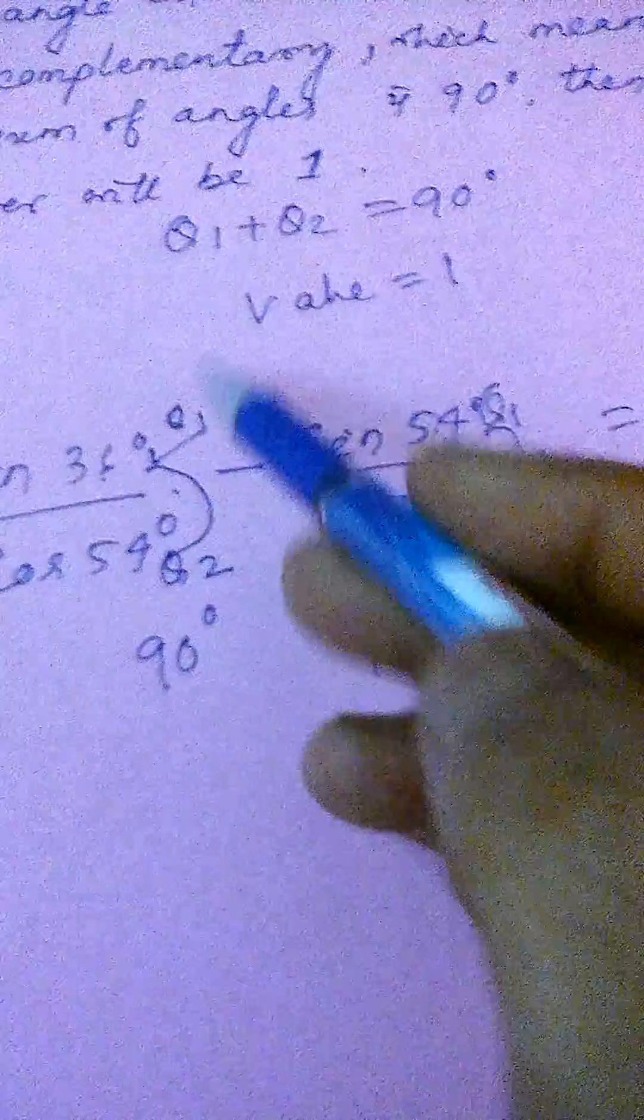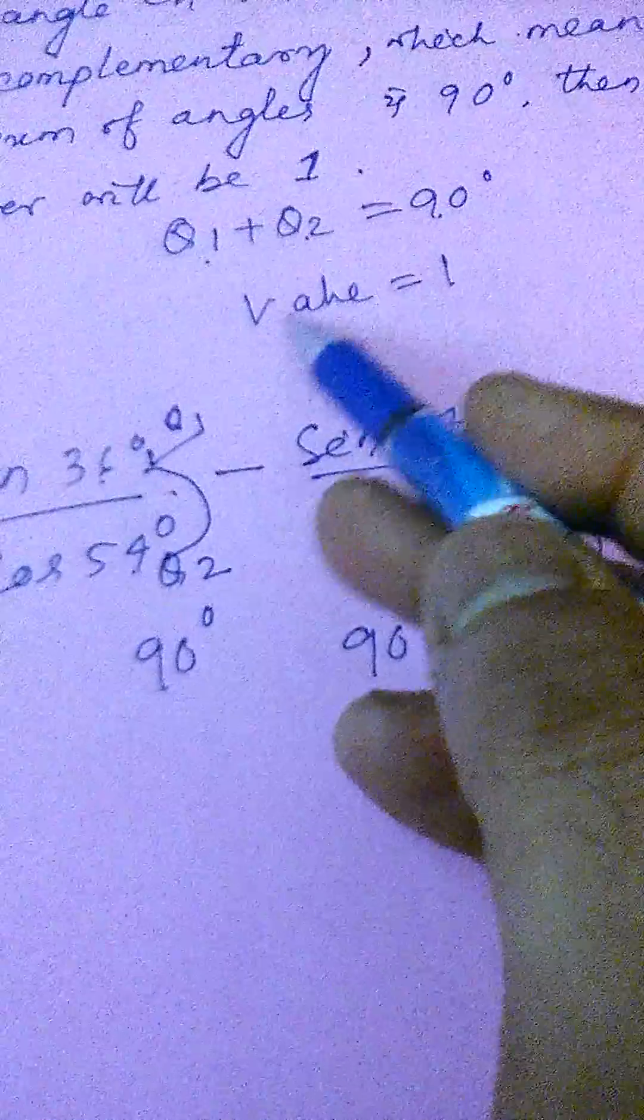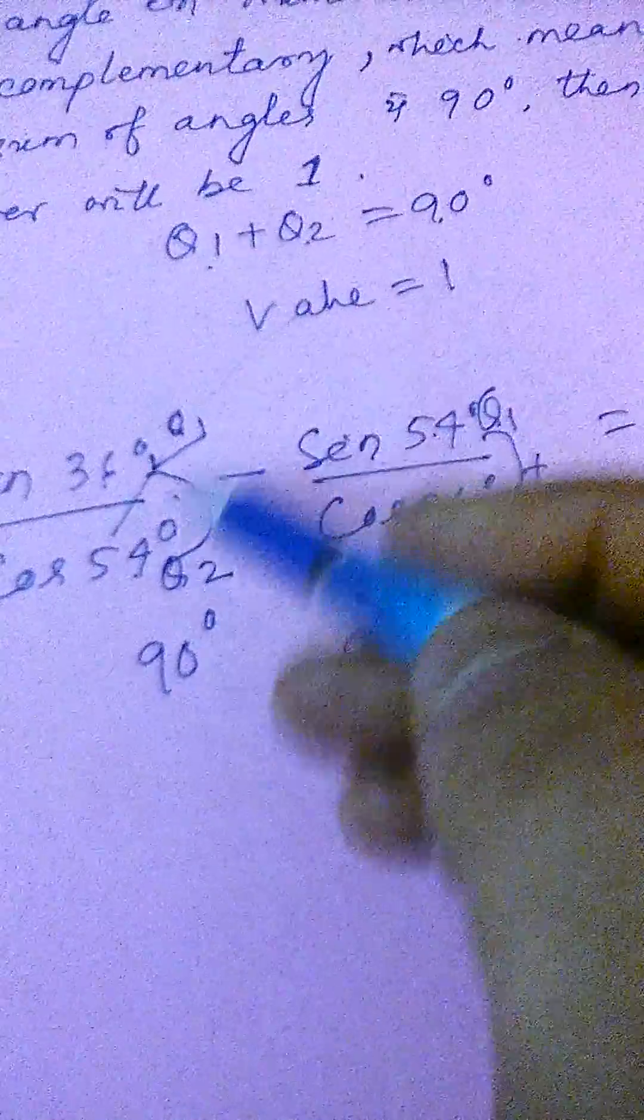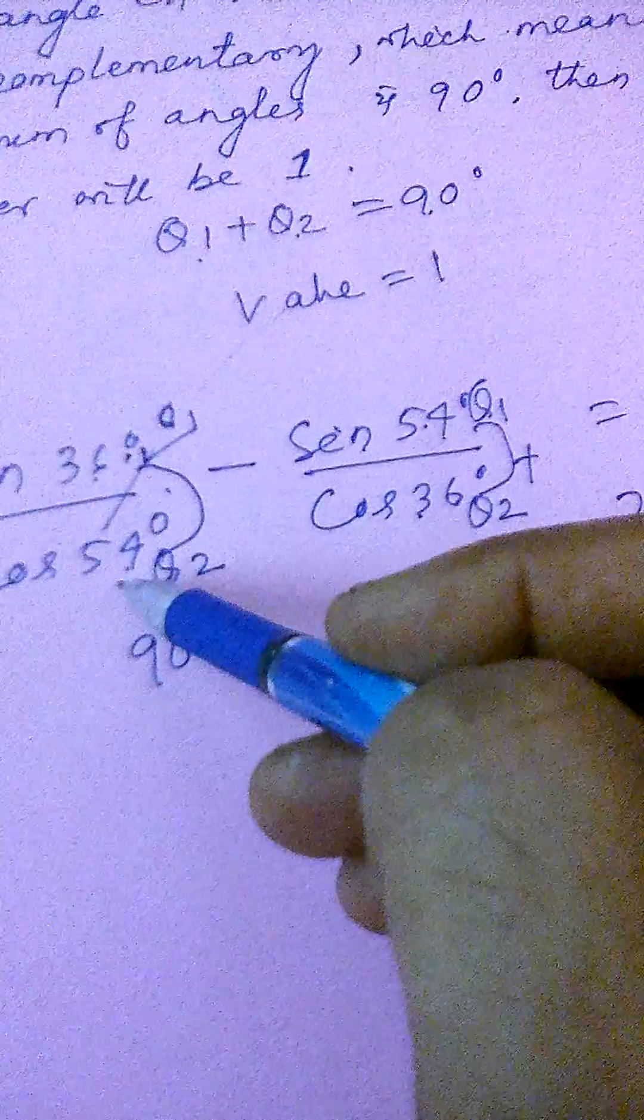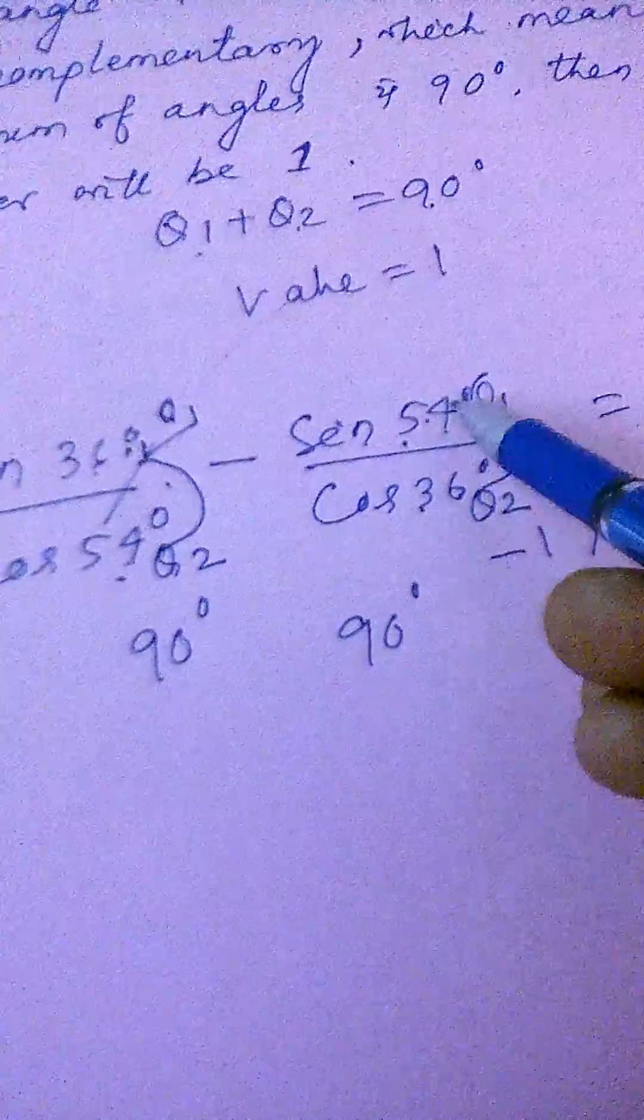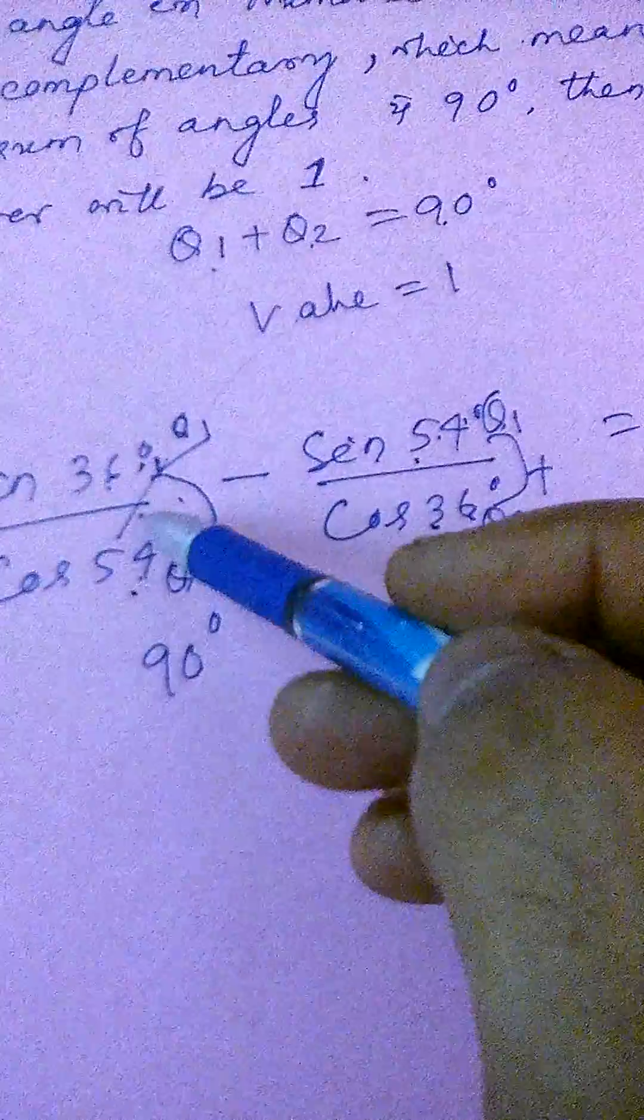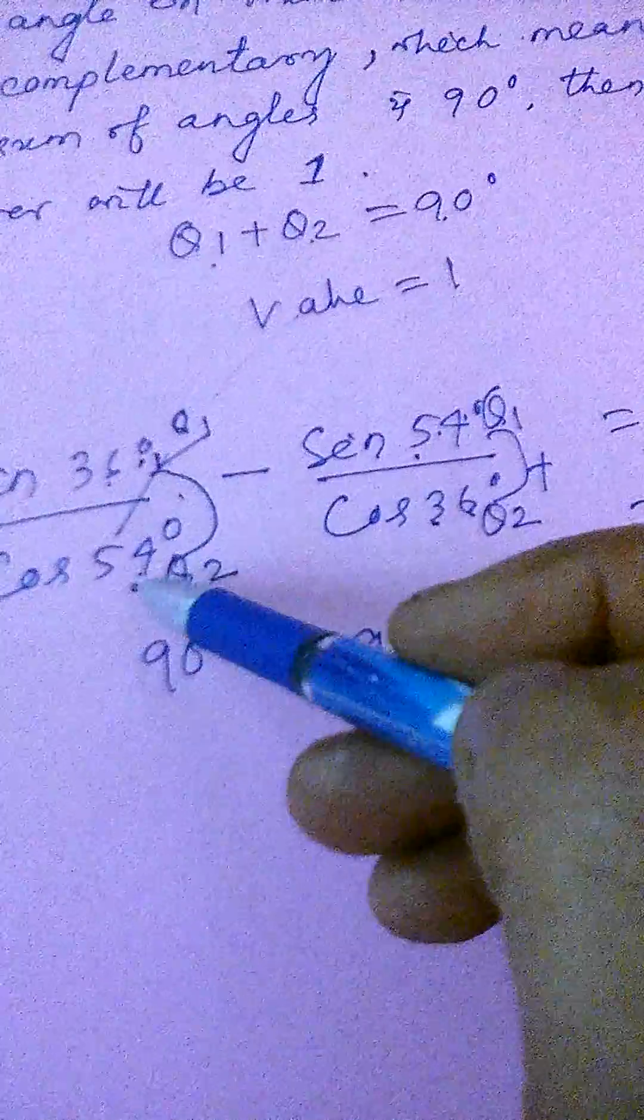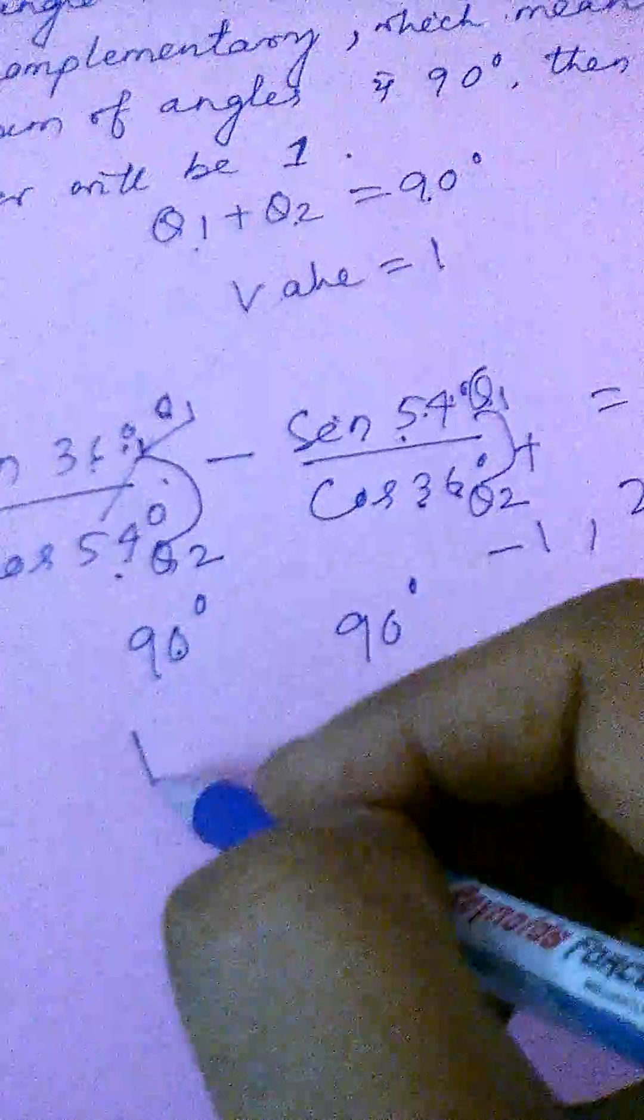As I have told, theta 1 plus theta 2 is 90 degree. In a trigonometric function, that is complementary, 36 degree numerator, 54 degree denominator. Or here you see 54 degree numerator, and 36 degree in denominator. And if the sum of this numerator and numerator is 90 degree, then the value is 1.